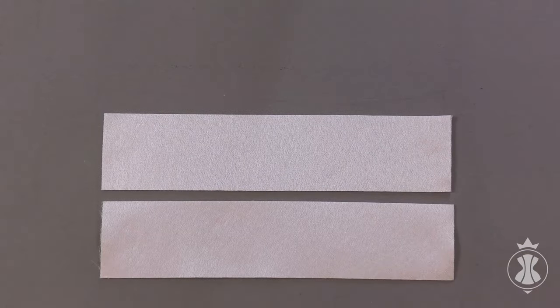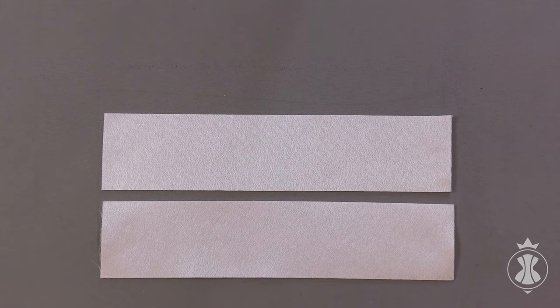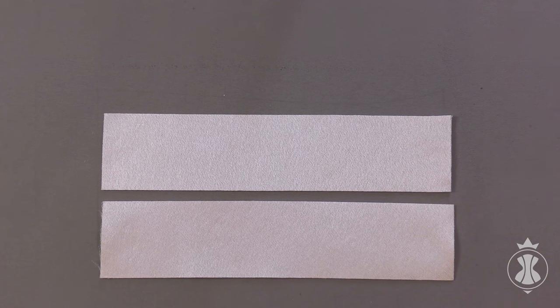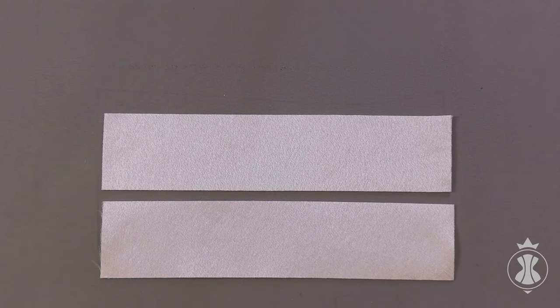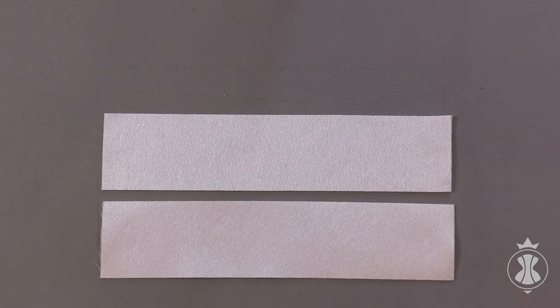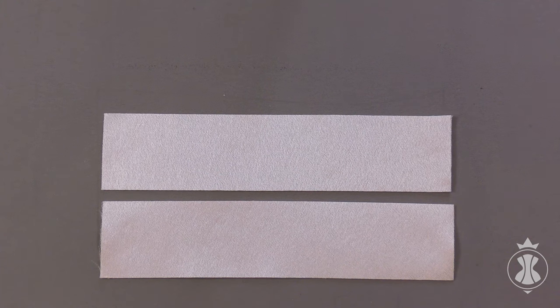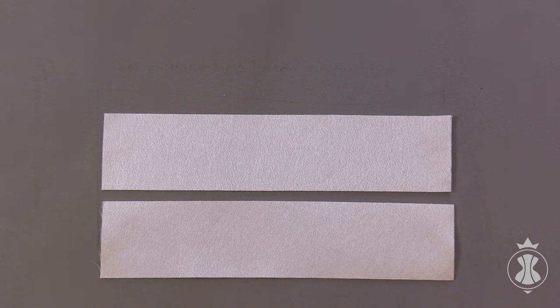Now let's sew removable plackets for air-loop lacing. You will need to cut two strips of duplicated fabric for one placket. The strip width is determined by the width of the bones, which you will attach to strengthen the placket. I will use a 1.2 centimeter wide wriggling bone. So let's calculate the width of the strip.